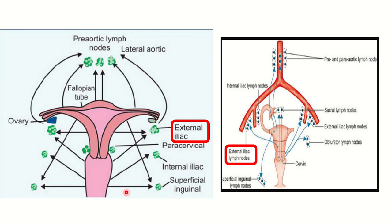We can also see that from the vagina, lymphatics drain to different parts. In the second picture, from the fundus there are pre-aortic and para-aortic lymph nodes, from the body they drain into the external iliac lymph nodes, and from the cervix drainage goes to different regions.